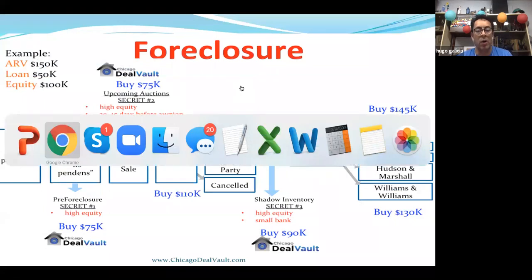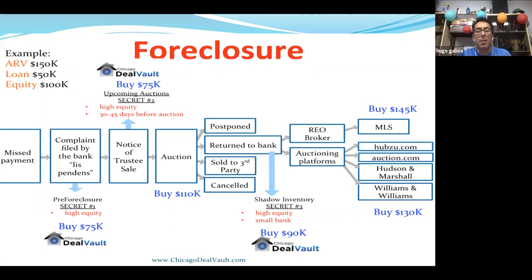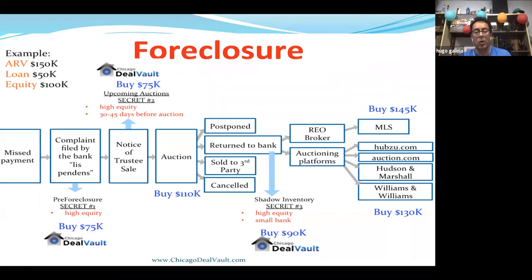If we don't do anything to help the owner in the pre-foreclosure stage — 30 to 90 days — and don't help them 30 to 45 days before their property goes to judicial auction, then the property goes to the courthouse and gets auctioned off. That's called the judicial auction or trustee auction. That's where you do not want to buy properties from. I'm going to tell you the disadvantages of buying at the judicial auction at the courthouse.